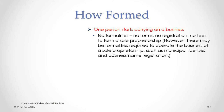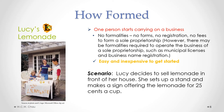However, there may be some formalities required to actually operate the business, such as getting a municipal business license and registering the business name. Consequently, it is very easy and inexpensive to get started as a sole proprietor compared to a partnership and especially a corporation. A scenario we will be working with throughout this module is called Lucy's Lemonades, involving a little girl named Lucy who starts up a lemonade business. We'll see her business evolve from being a sole proprietorship all the way to being a public corporation. Lucy decides to sell lemonade in front of her house, sets up a stand, and offers lemonade for 25 cents a cup — creating a sole proprietorship.